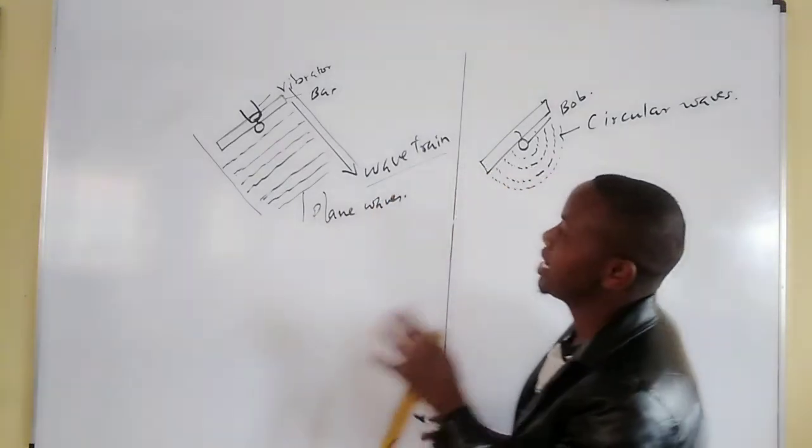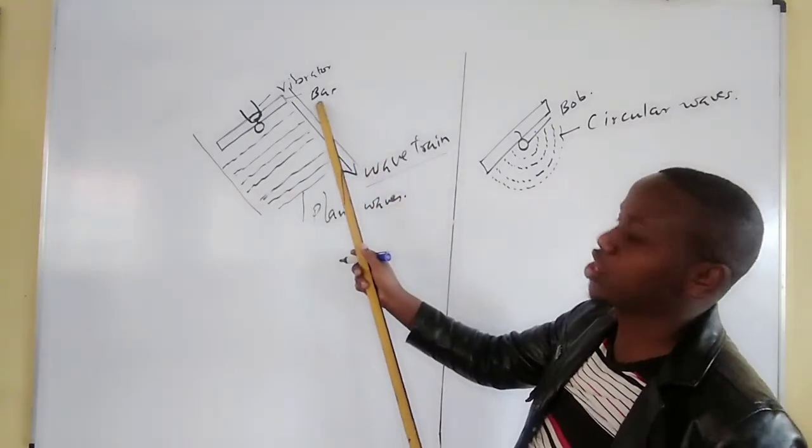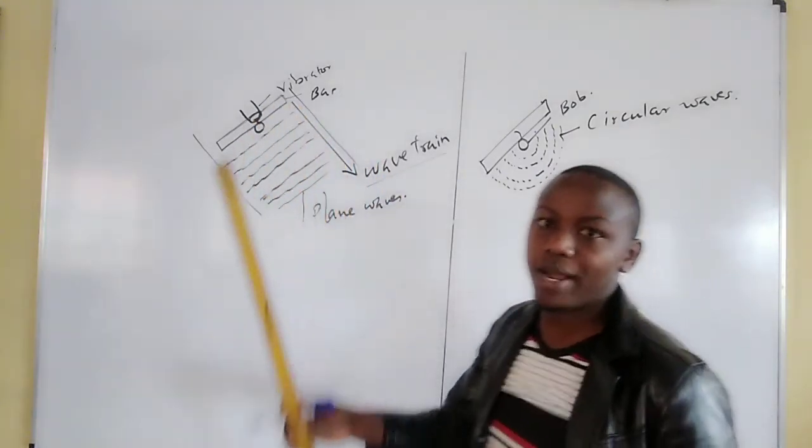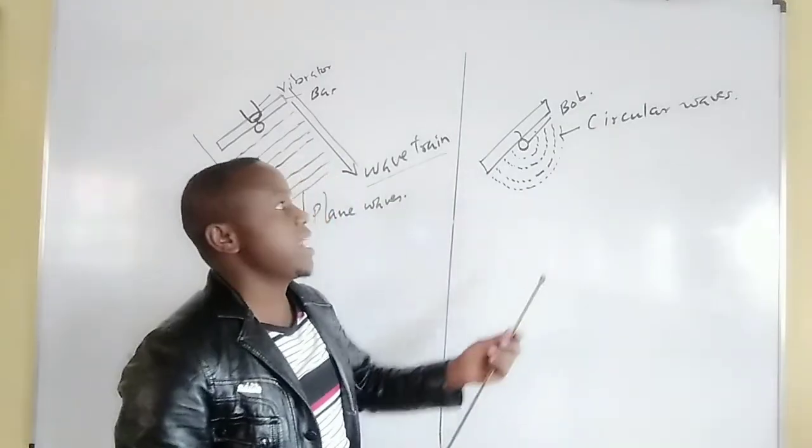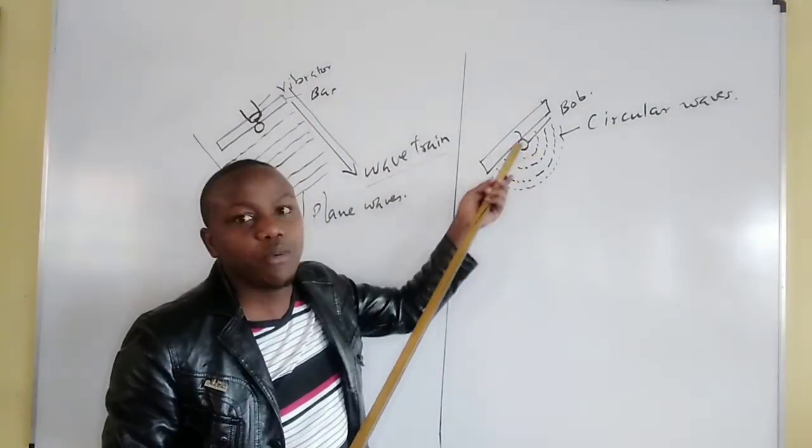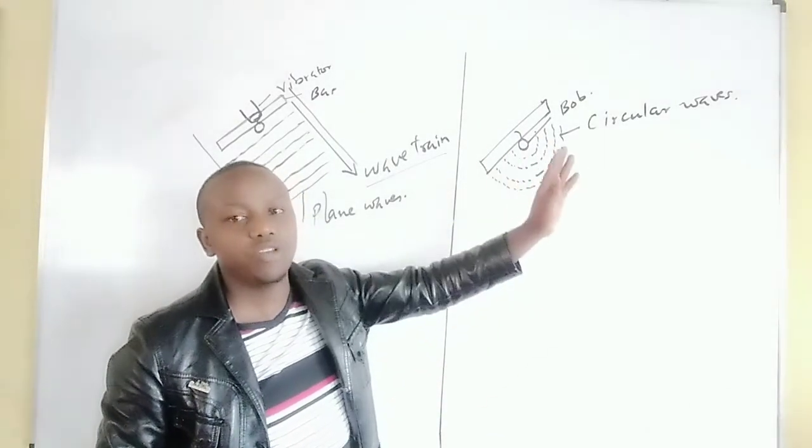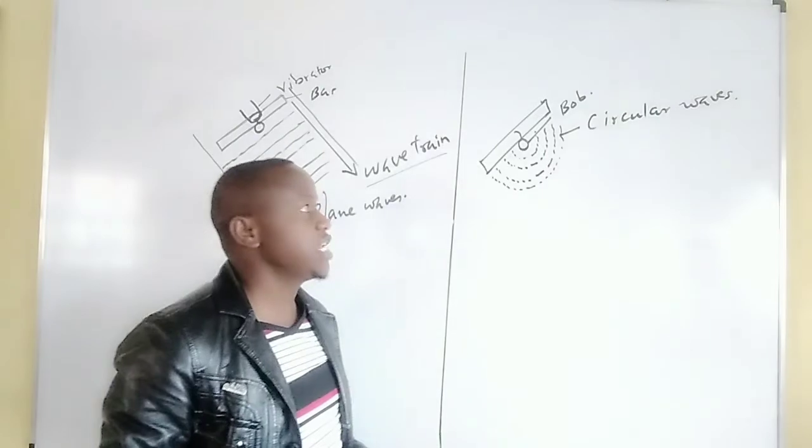Therefore if we desire to study plain waves, we will use the straight bar alone. When we want to study circular waves, then now we introduce this circular bob, which makes the waves to be produced and they get produced. We have a study of them.